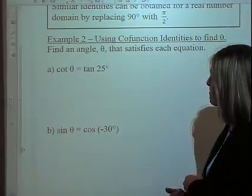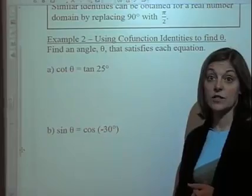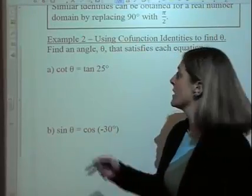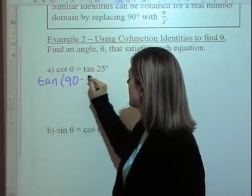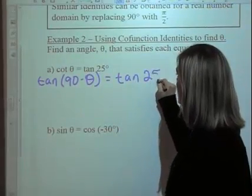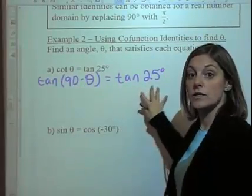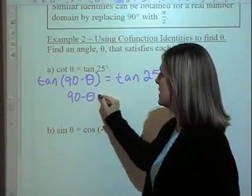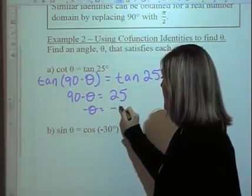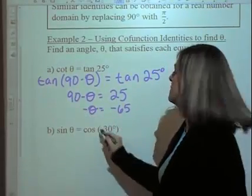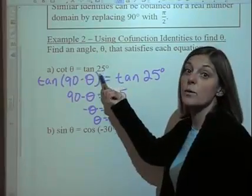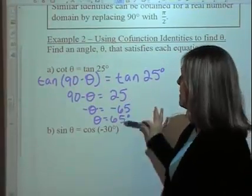Let's look at example 2: cotangent of θ equals tangent of 25. We can replace cotangent of θ with tangent of (90 − θ) because cotangent and tangent are co-functions. If tangent of (90 − θ) equals tangent of 25, then 90 − θ must equal 25. Subtracting 90 from both sides gives negative θ = −65, so θ = 65 degrees.